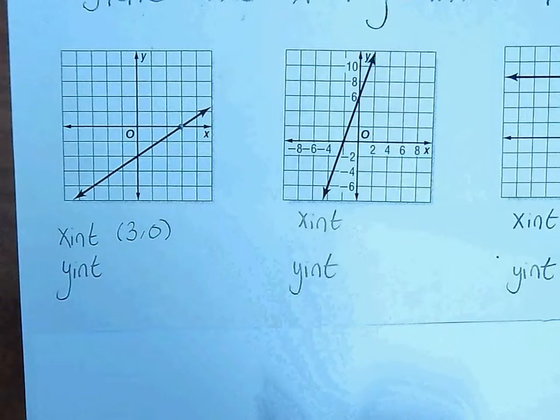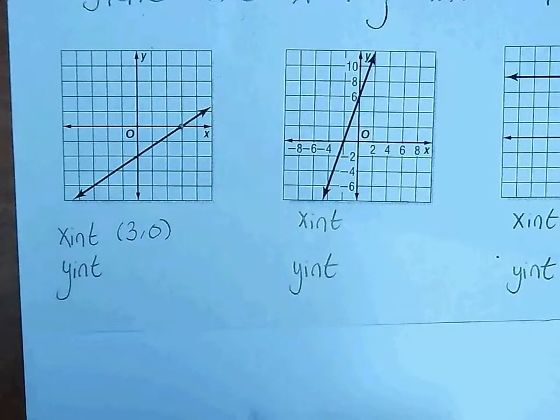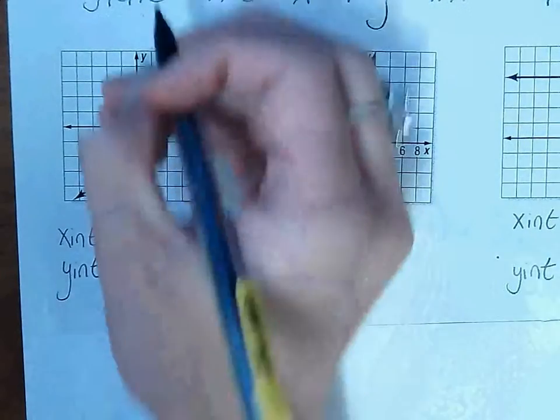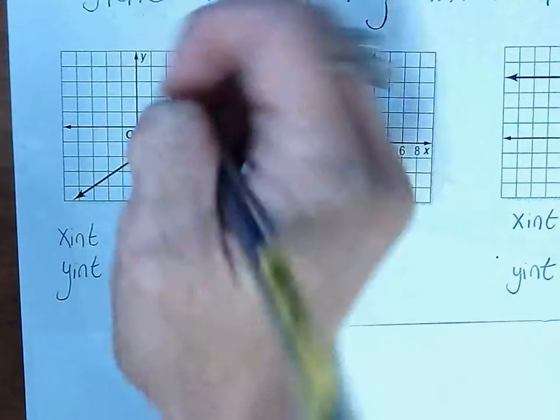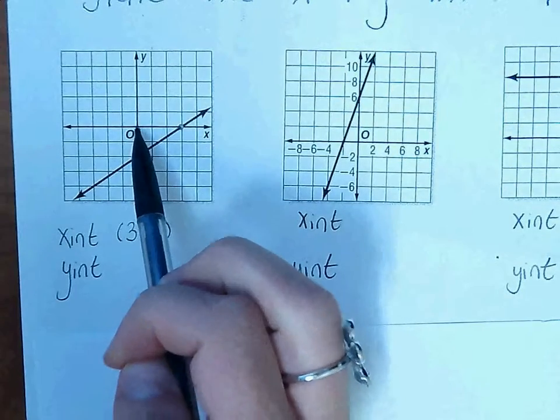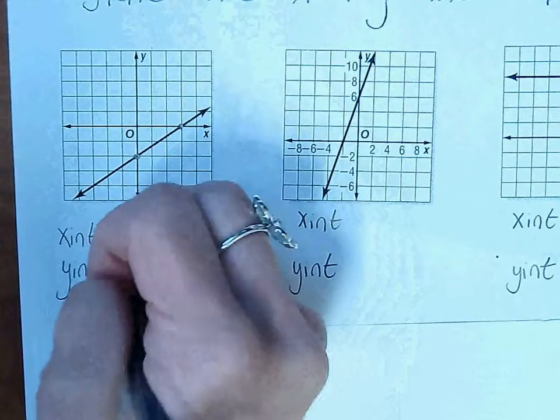Y-intercept, where the line touches the y-axis. So here's the y-axis, here's your line. So we went nowhere left or right, but we're going 2 down. So 0, negative 2.